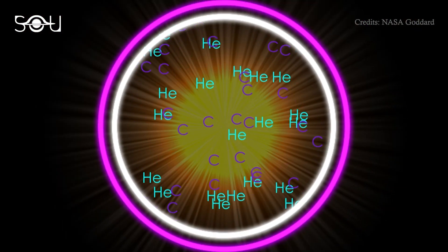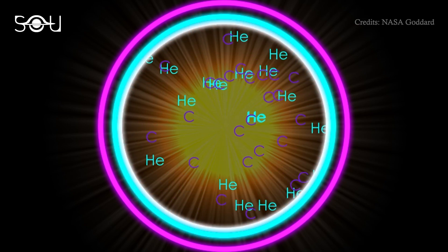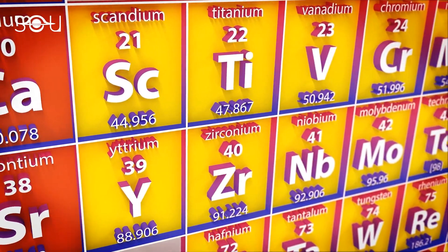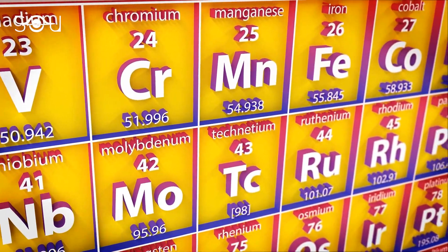Once the temperature hits the 100 million Kelvin mark, helium starts fusing into carbon. Sun-like mid-sized stars do not have the potential to fuse elements heavier than carbon, but in the case of massive stars, the fusion goes on till iron is formed.